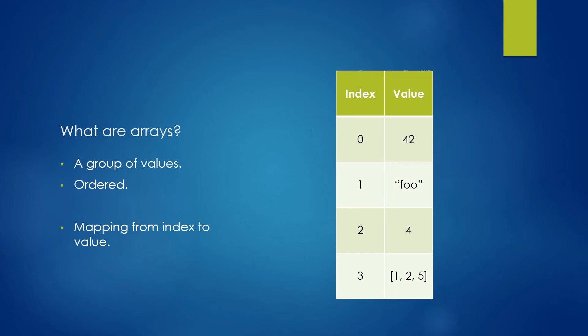At index two, which is the third value, we have the number four. And finally at index three, we see that we have another array with values one, two and five. So what's important to notice here is that we can really have any kind of value stored in arrays and they're all in sequence. Another way to think about arrays is that they're mapping from indices to values.